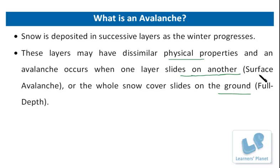An avalanche may be dry or wet according to the weather — that is, whether water is present in the snow or not. It may also be a loose snow avalanche when it starts at a single point, or a slab avalanche which occurs when an area of more cohesive snow separates from the surrounding snow and slides out. In practice, any snow slide big enough to carry a person down is hazardous.